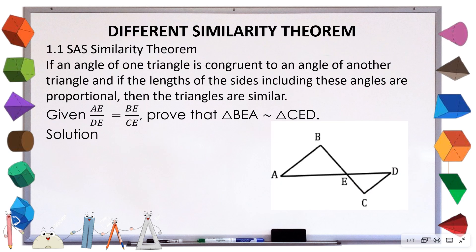We have here your SAS, or Side-Angle-Side similarity theorem. This states that if an angle of one triangle is congruent to one angle of another triangle, and if the lengths of the sides including this angle are proportional, then the triangles are similar. It's just like the SAS postulate — the side, the angle, and the sides. The only difference is the sides must be proportional.